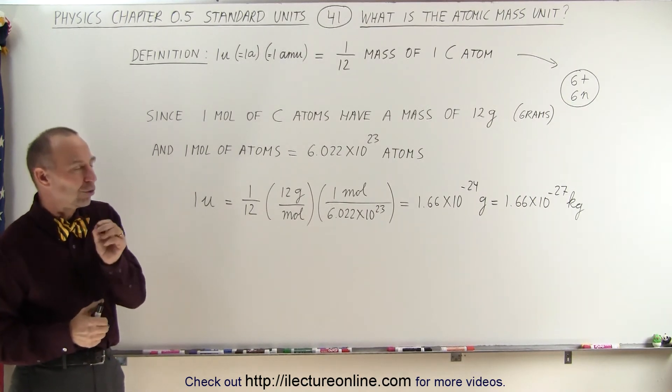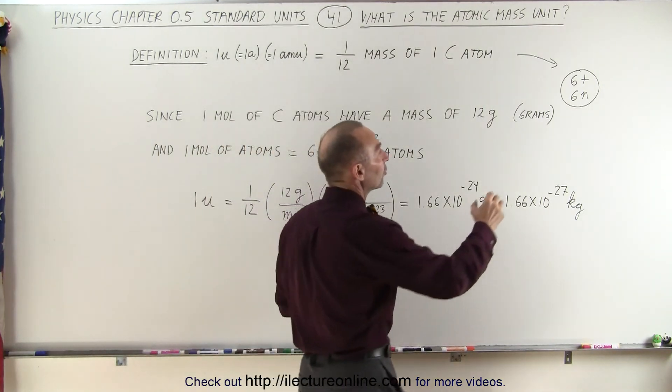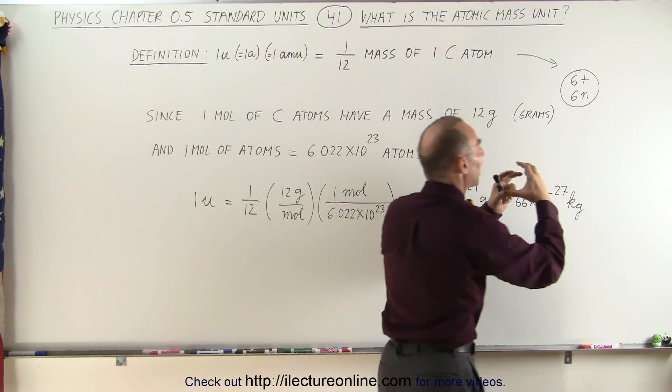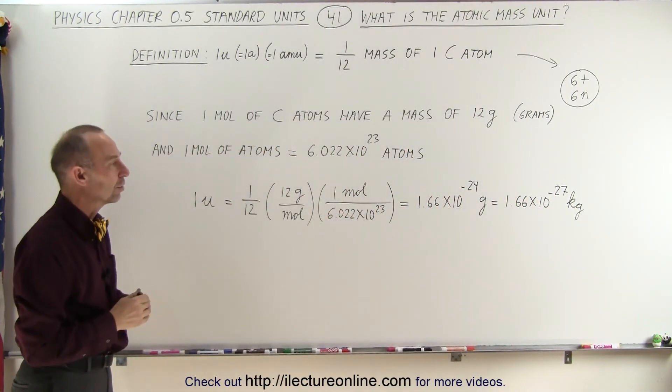Actually, a proton and a neutron are slightly higher than that, because it turns out, as you combine them inside a nucleus, they lose a small amount of mass in order to be able to stay together like that in a nucleus.